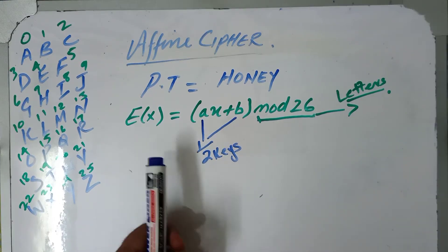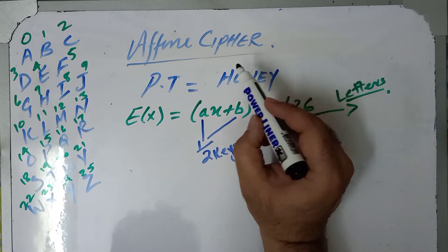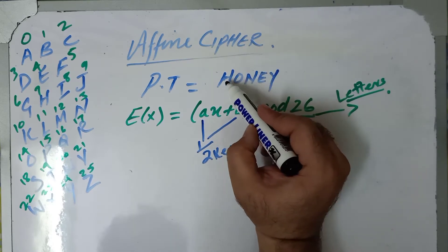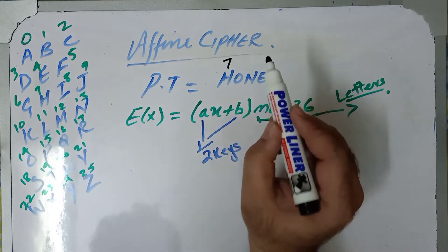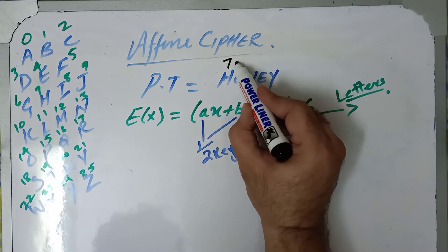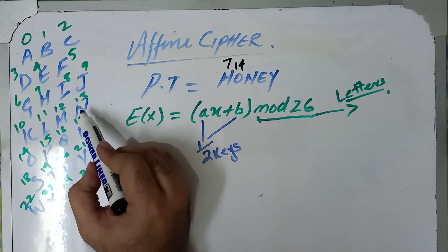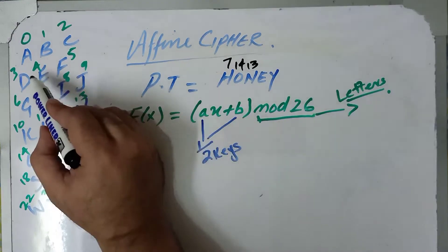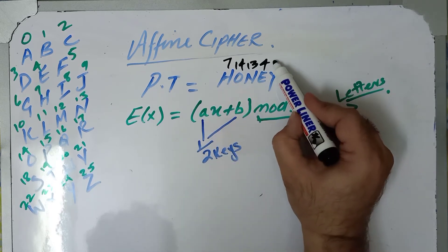This formula is used for encryption in an affine cipher. Now we will number our plain text x: H equals 7, O as you can see is 14, N is 13, E is 4, and Y is 24.